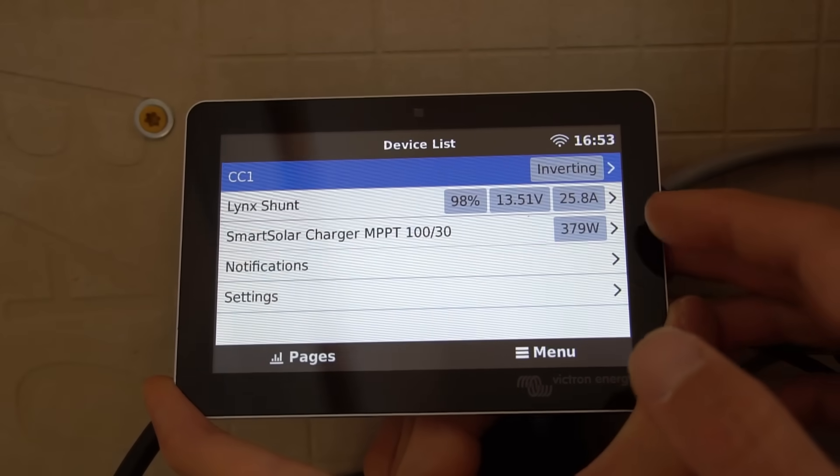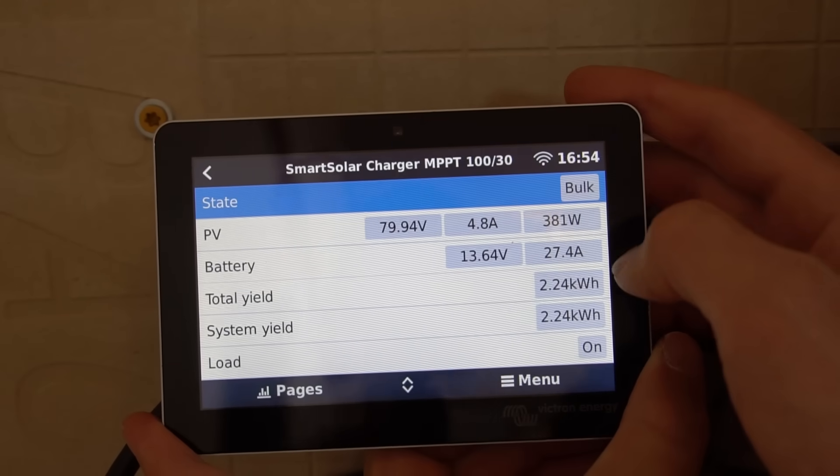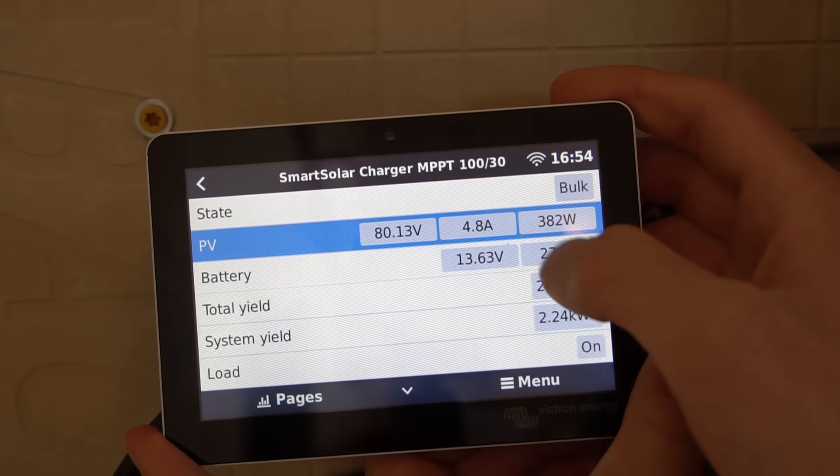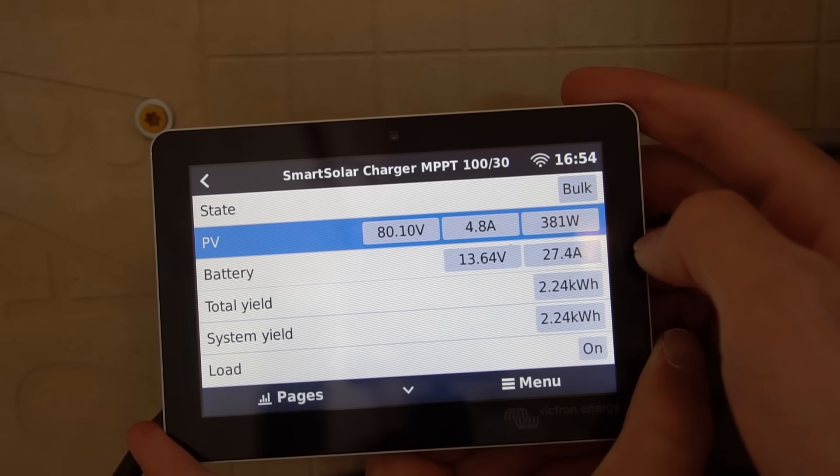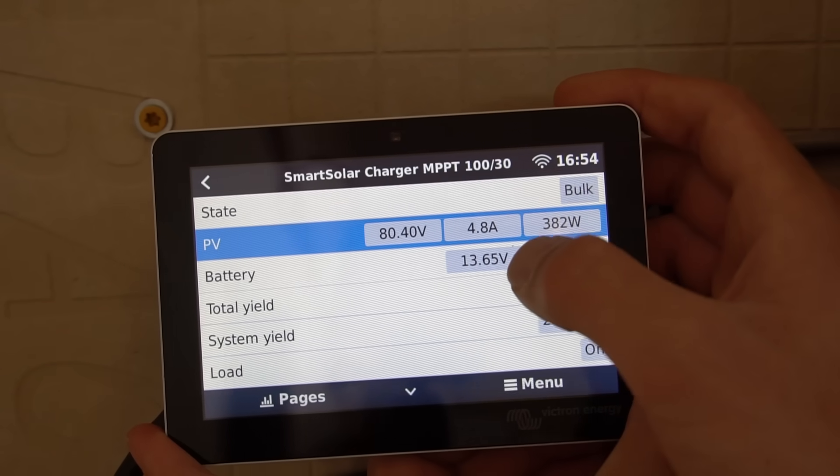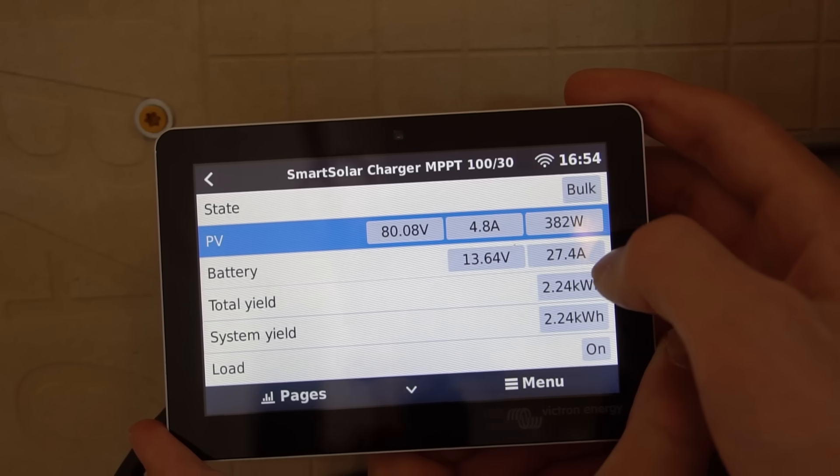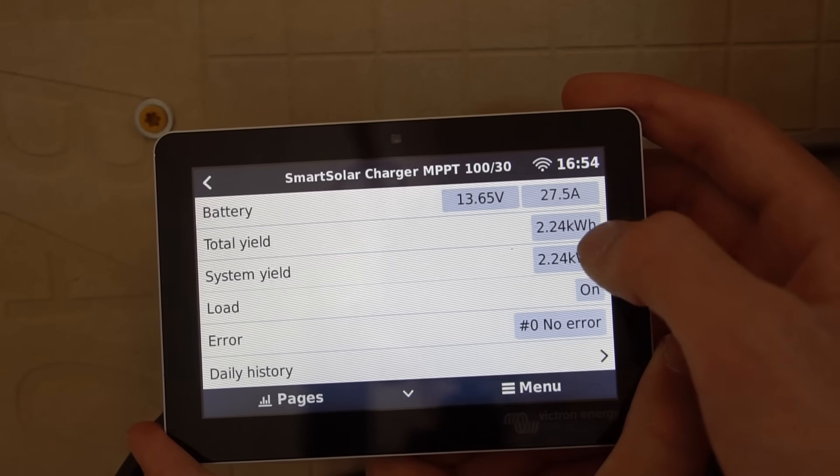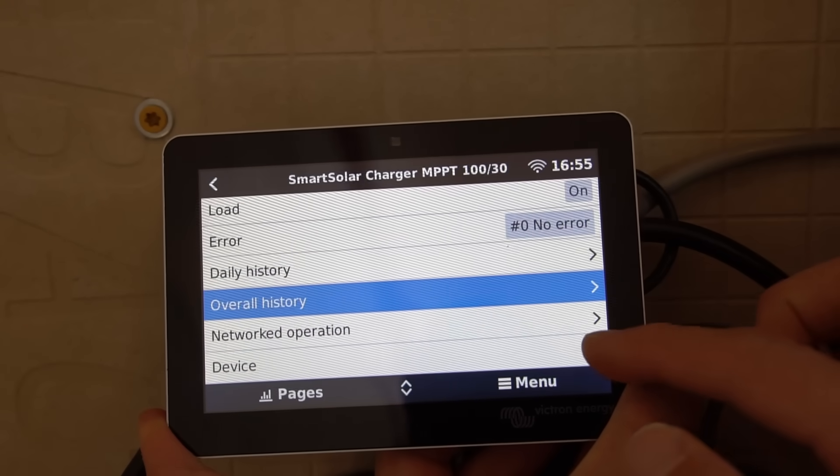Now let's check out the smart solar charger right here. And this section is pretty cool. So right now we're doing a bulk charge, and then it shows you the PV array stats. So the voltage, the input amperage, and how much in Watts you are getting from your solar array. The battery, it shows the voltage at the output or where it connects to the battery, and then how much current we're pushing into that battery right now, which is 27 amps. And I just set up the system. So we've only produced 2.24 kilowatt hours total. And then lots of other random settings. If we press device, it will show you how it's connected to the system. So this one is using VE direct.